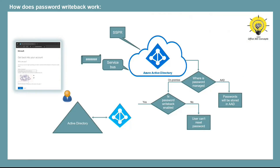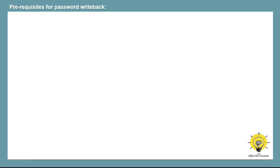There are multiple reasons a password reset operation could fail: the password reset service was down, the selected password doesn't meet on-premise password policies, or the user account wasn't found in on-premise Active Directory. That covers how the password writeback process works in the background.